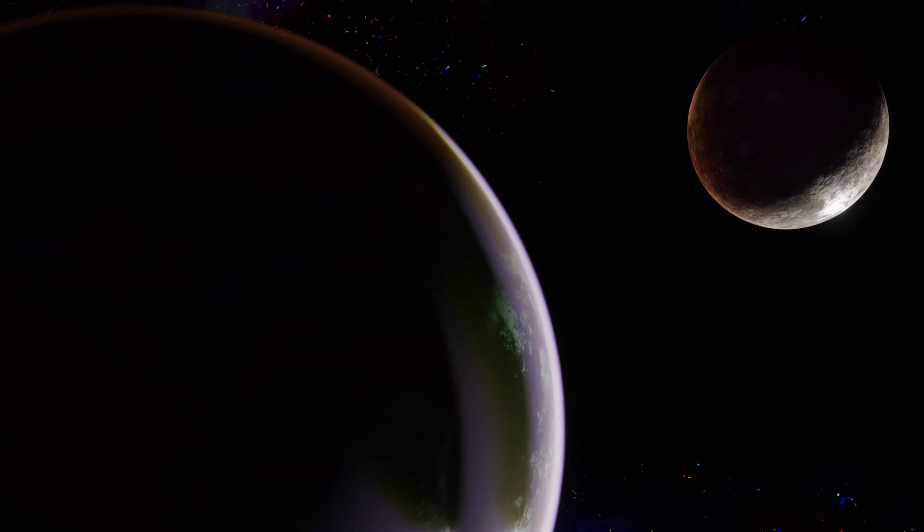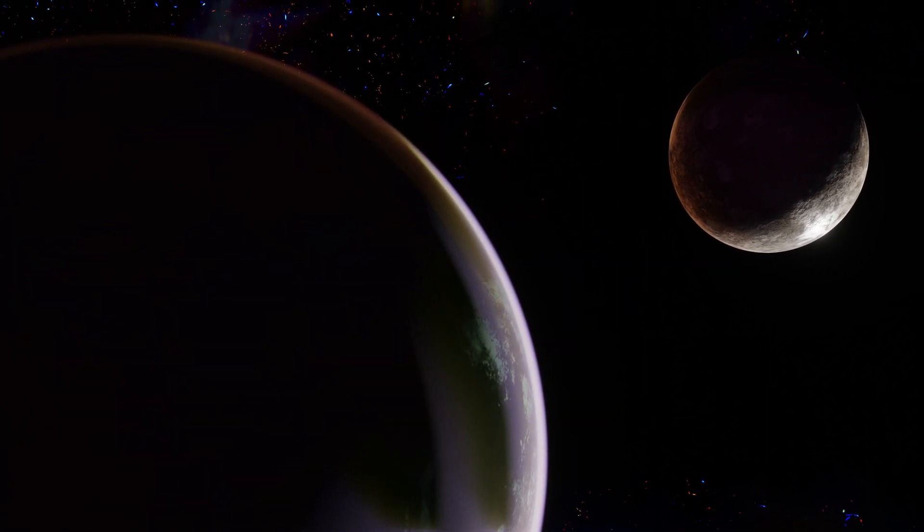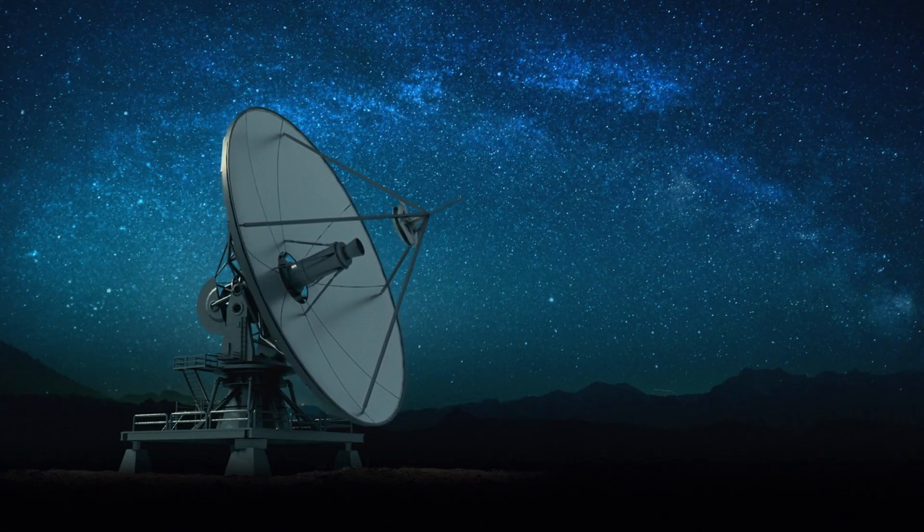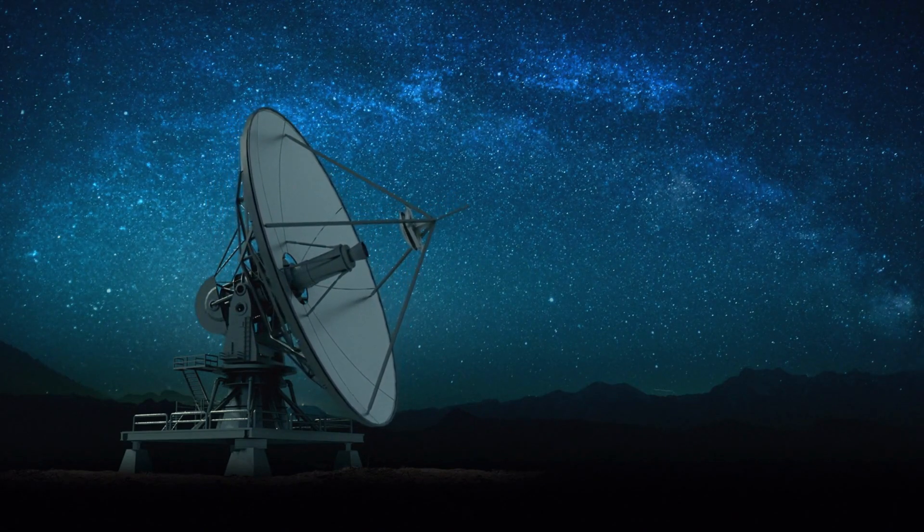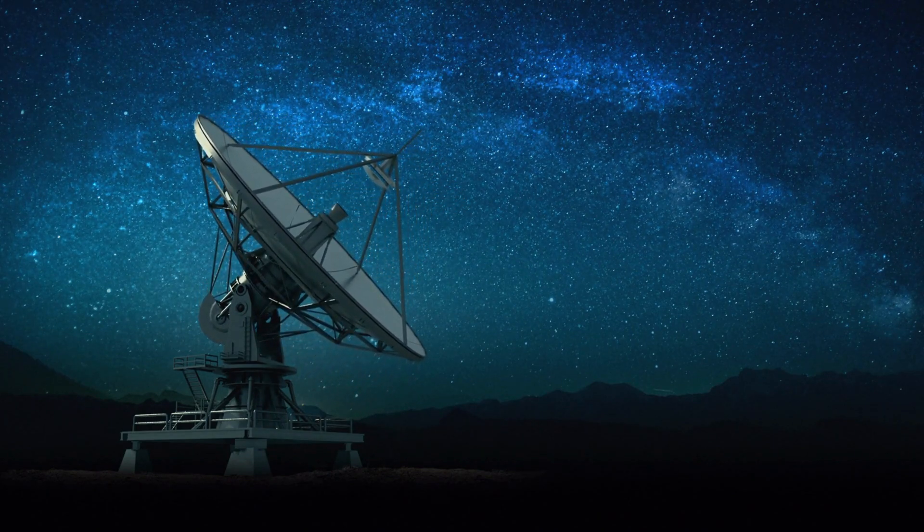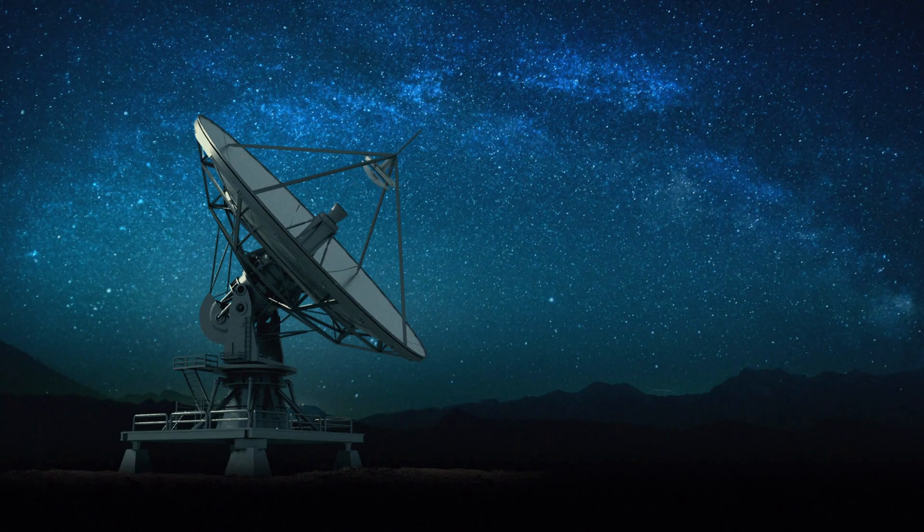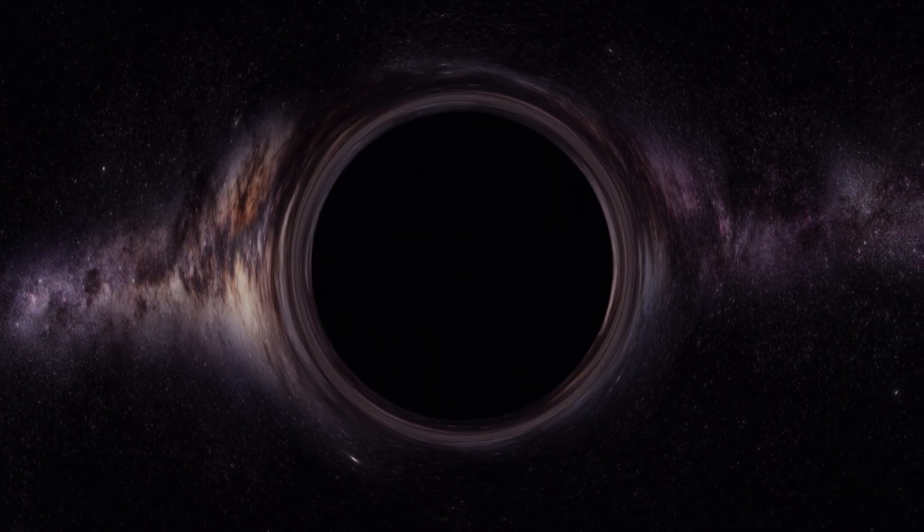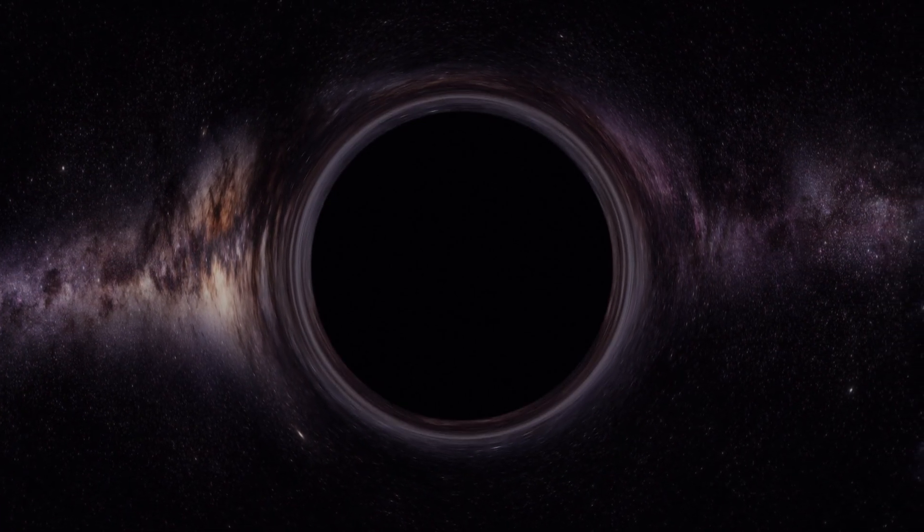You might be wondering, if black holes are so intriguing, why can't we see them directly? The answer lies in their voracious gravitational pull. Black holes don't emit light, and they distort the path of light passing nearby, making them invisible to conventional telescopes. We can only detect their presence through their gravitational effects on surrounding matter.